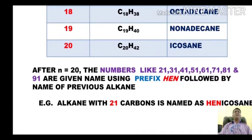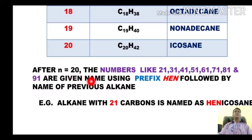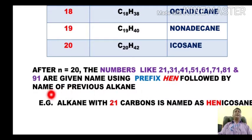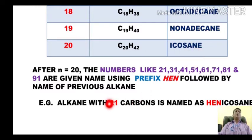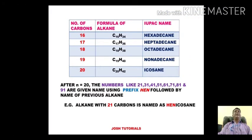After n=20, numbers like 21, 31, 41, 51, 61, 71, 81, 91, 101 and so on are named using the prefix 'hen-' followed by the name of the previous round-number alkane. For example, the alkane with twenty-one carbons is called heneicosane — 'hen-' for one, added before eicosane (the twenty-carbon alkane). You will see this trend in the subsequent alkanes as well.